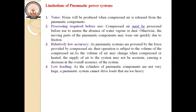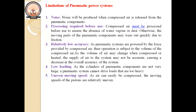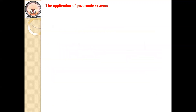Low loading capacity is another limitation — the system is not capable of withstanding high pressure; the pressure limitation is only 6 to 10 bar. Uneven moving speed is also a disadvantage — since air is easily compressed, the pressure keeps varying as the piston reciprocates during the compression stage, resulting in uneven moving speed.